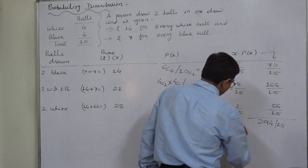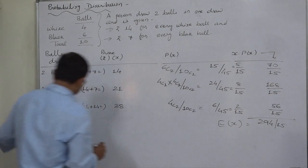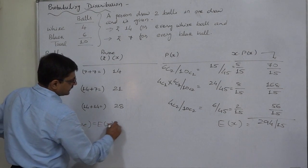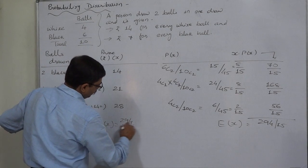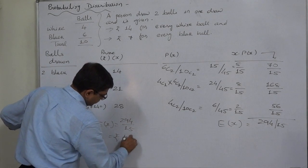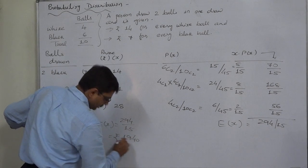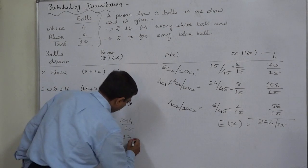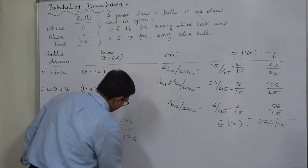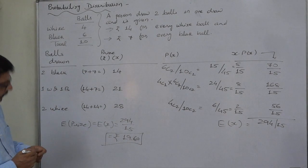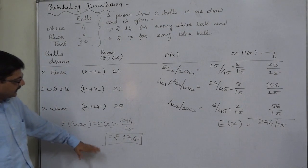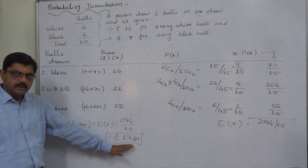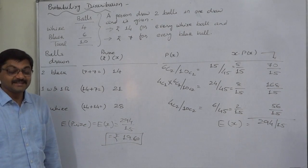This is the E(X) or expected price. So ultimately the expected price is equivalent to E(X), that is 294 by 15, that is rupees 19.60. 294 divided by 15 comes to 19.6. So the person or the individual can expect a price of 19.60, that is nothing but the average price. That's it. Thank you very much.